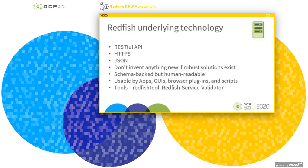Redfish uses a modern tool chain. Redfish is a RESTful API, so it uses the CRUD operations from REST with HTTP methods: POST for CREATE, GET for READ, PUT and PATCH for UPDATE, and DELETE for DELETE.